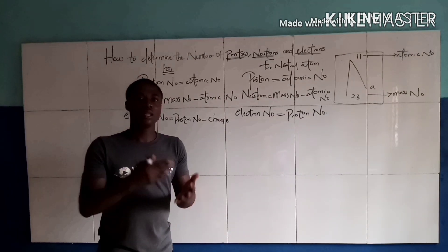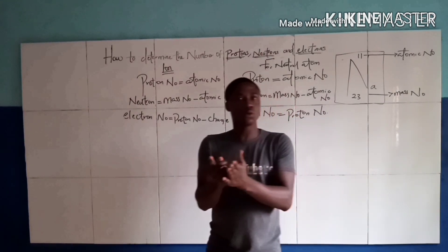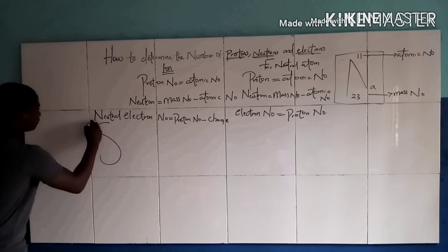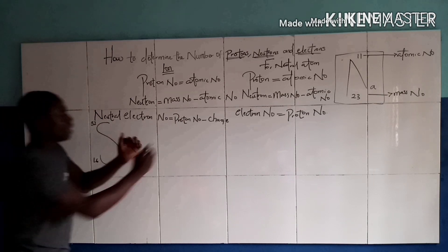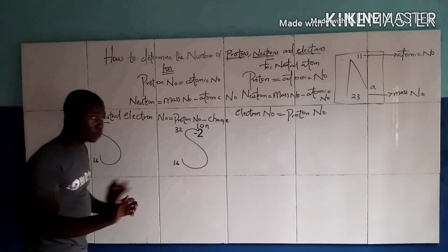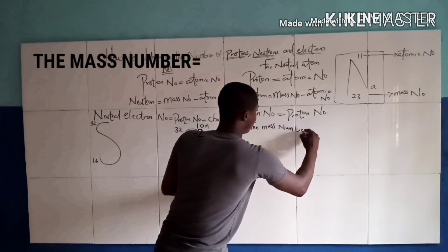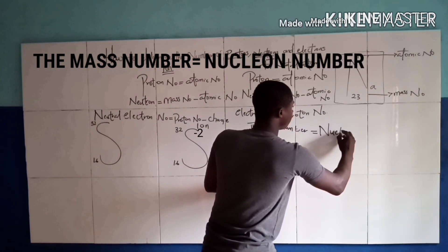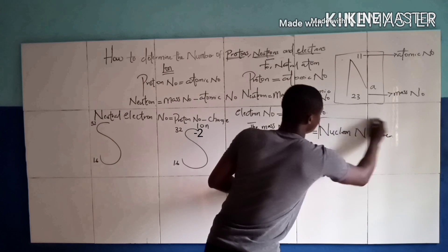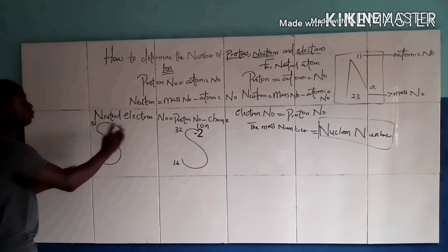Let's move on to the last question for the day. We'll be talking about the atom of sulfur. Sulfur can be an ion and also be neutral. This is the neutral form of sulfur, and this is the ion form of sulfur. Please note: the mass number is the same as the nucleon number, not the neutron number. Now, let's determine the proton number, neutron number, and electron number of these two nuclides.